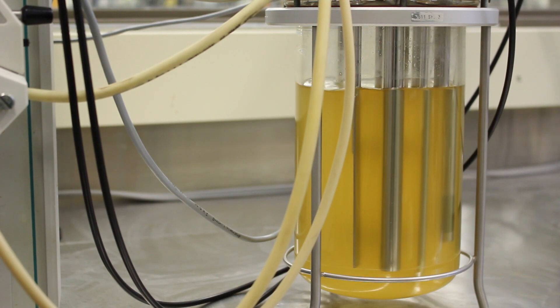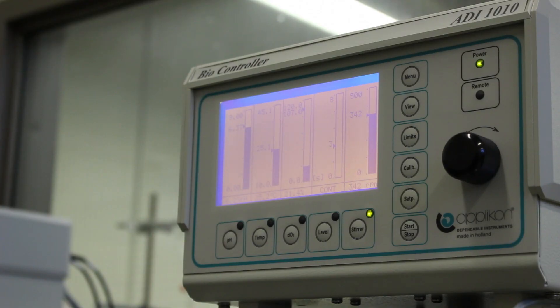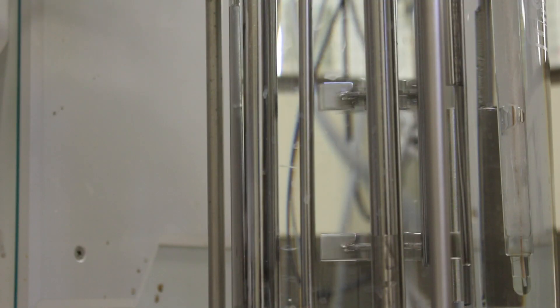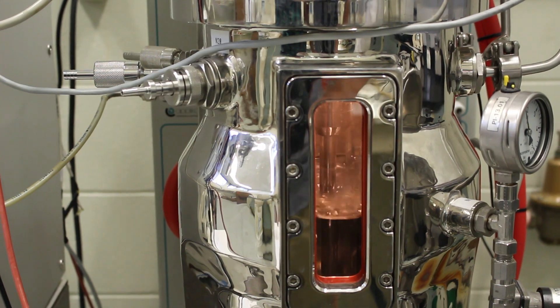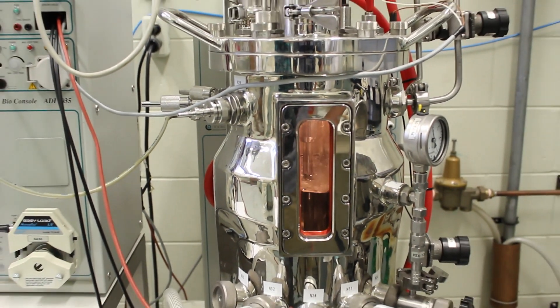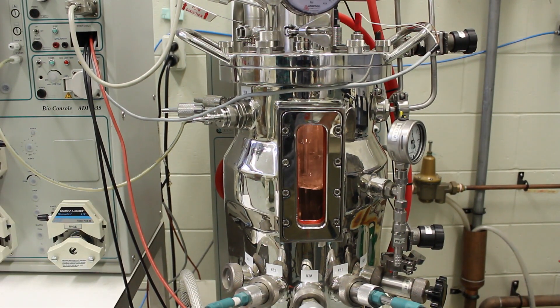Basically, you add all your components to the reactor vessel and turn it on. The controller determines which substances to add to it—your acids and bases—and ferments your product in there to create production of ethanol.